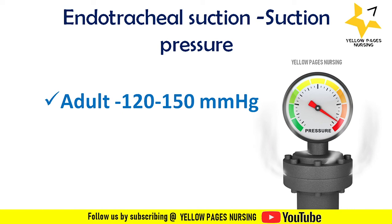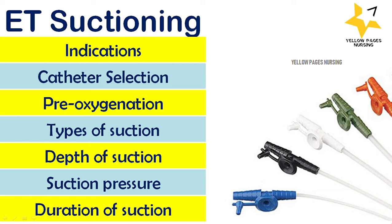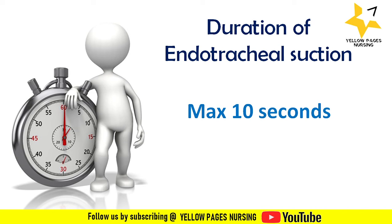Next is suction pressure. For adults, the appropriate suction pressure is 120 to 150 mmHg. If the suction pressure is too high, it may cause damage to the respiratory mucosa and destruction of the epithelial cilia of the airways.